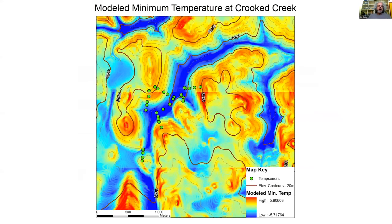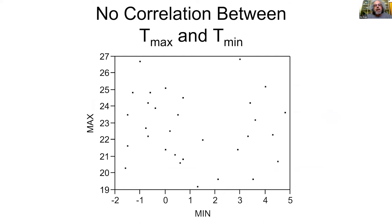We can build another T-min model showing cold valley floors and warmer ridgetops and steep slopes across the landscape. Interestingly, there's no correlation between T-max and T-min at this scale — we have about an eight degrees Celsius gradient in T-max and about an eight degrees Celsius gradient in T-min with no correlation between them. So you can get almost any combination of these two factors in a really small area.